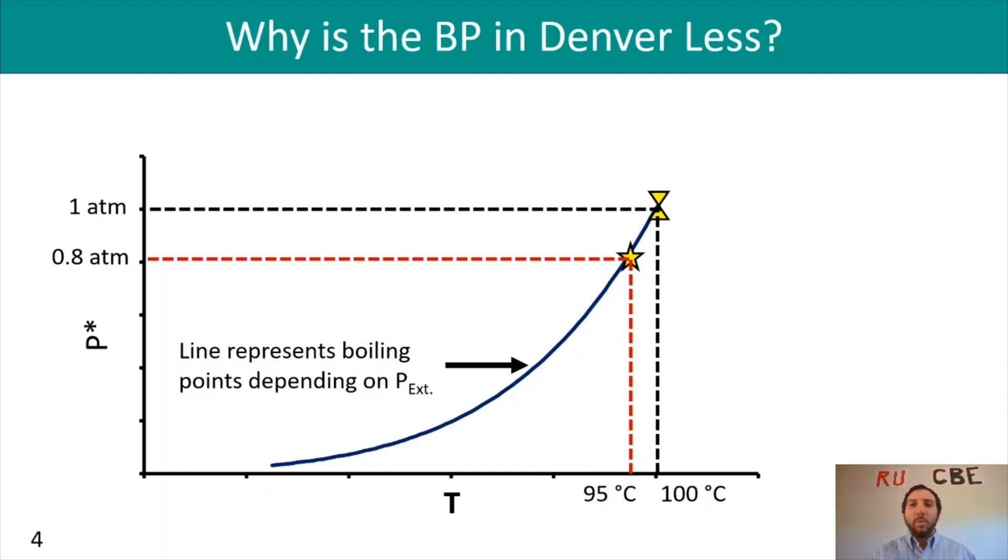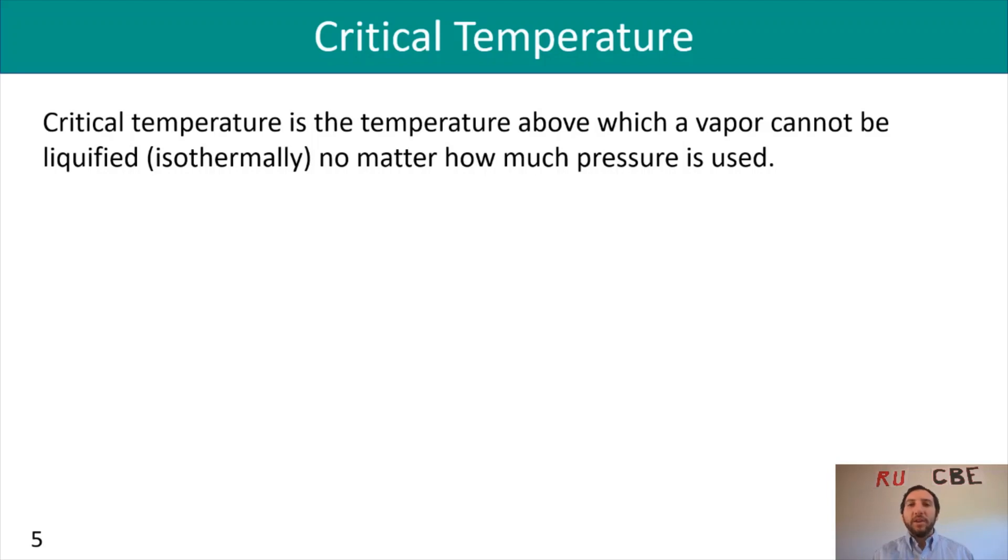You have this vapor pressure, this escape tendency, the likelihood that your liquid is going to become a vapor. Now, if I did the opposite, I'm trying to make my vapor become a liquid. There's going to be a point where you no longer can have that happen. You can't have your vapor become a liquid because your conditions are not favorable for that. There's a certain point called the critical temperature, where that temperature is above where vapor can be liquefied isothermally.